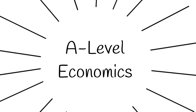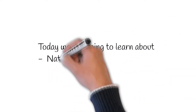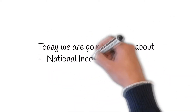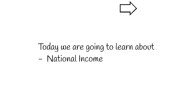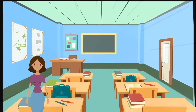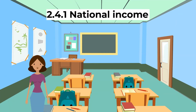Welcome to this video in our series on A-level economics. Topics covered today are as follows: 2.4 National Income. If you haven't seen our previous videos, click on the card above.